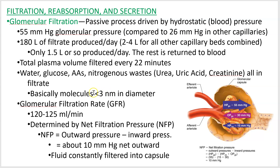Now let's talk about glomerular filtration rate, or GFR. This is about how much per minute — the 180 liters per day boils down to about 120 to 125 milliliters per minute. This is determined by what's called the net filtration pressure.